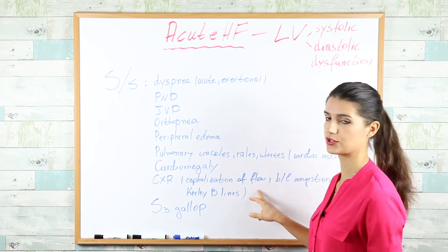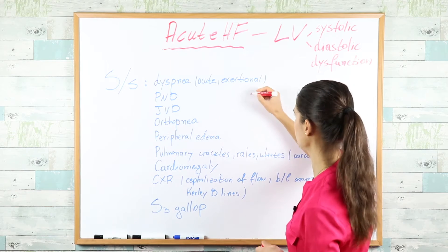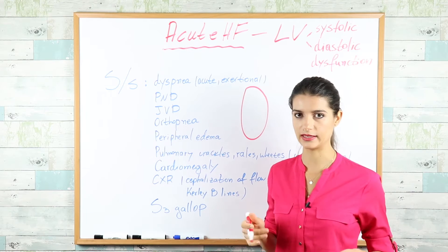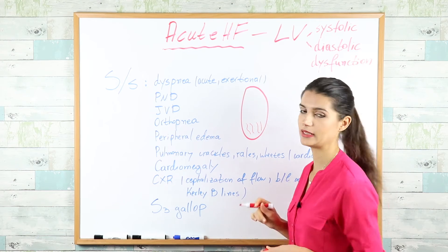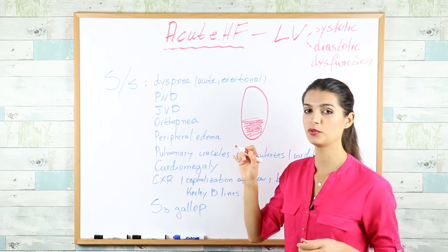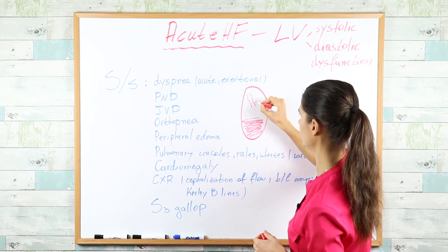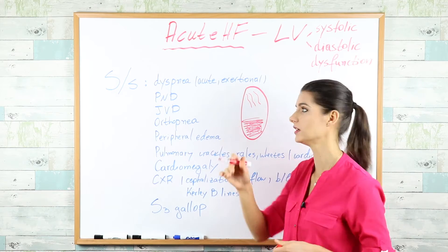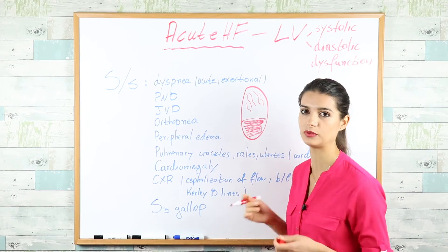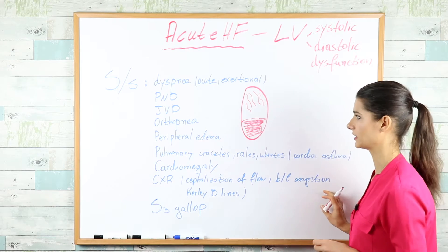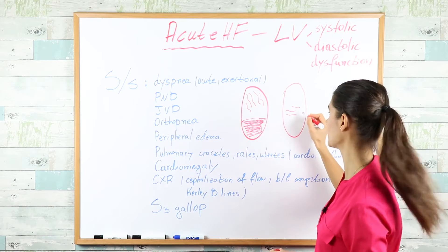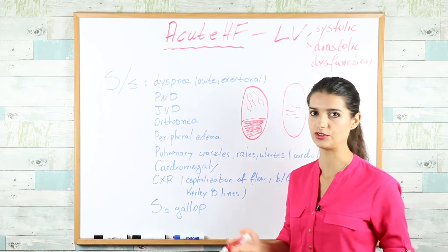On chest X-ray you can see cephalization of flow — normally blood flow is at the lung bases due to gravity, but if the bases are filled with fluid from pulmonary edema, blood flow shifts to the apex. That's 'cephal' from head. You can also see bilateral congestion and Kerley B lines — subtle horizontal lines indicating interstitial edema.